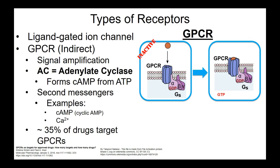G protein-coupled receptors are indirect. Key molecules to be familiar with include adenylate cyclase — an enzyme — and second messengers. The major second messengers are cyclic AMP and calcium; we'll focus mainly on cyclic AMP. It's estimated that about 35% of drugs — a little over one in three — target G protein-coupled receptors, making them really important and common drug targets.